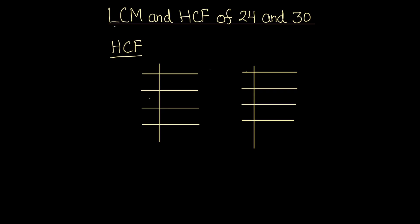In this method, we divide numbers using prime numbers and find the factors of the numbers. So first we will find the HCF of the two numbers. For finding the HCF, we are going to divide the two numbers separately and find their factors.